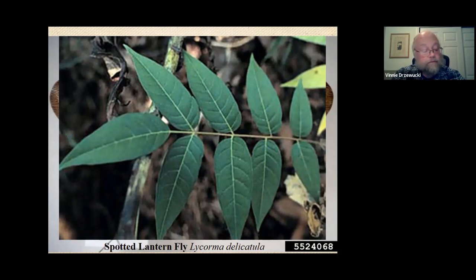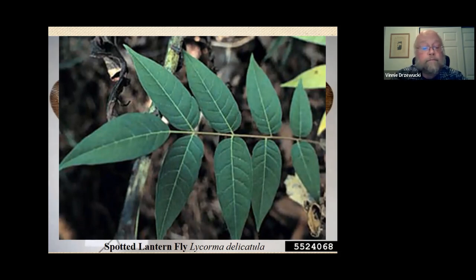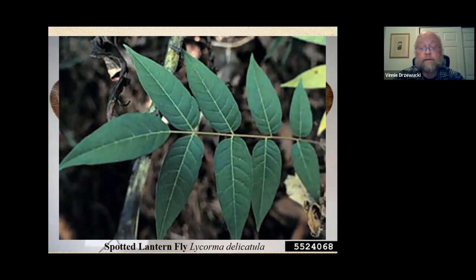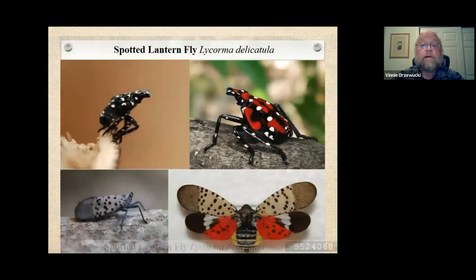In the U.S., spotted lanternfly was first discovered in Pennsylvania in 2014. It has since been found in New Jersey, Delaware, Maryland, Virginia, and upstate New York. The first New York State infestation was discovered in Staten Island in August of 2020, so it's relatively new in the area.